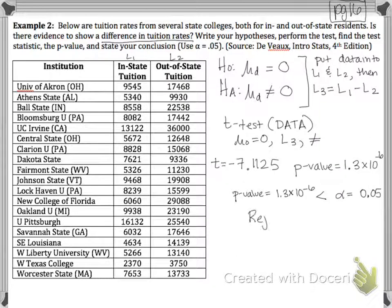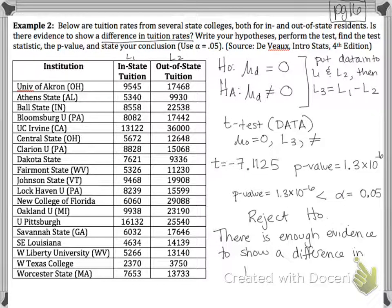This means we get to reject the null. My dog is excited about it. I don't know if you can hear her. And then I get to say that there was evidence to show a change. So there is enough evidence to show a difference in tuition rates, but that's exactly what we showed. So a difference in the tuition rates.